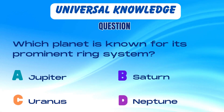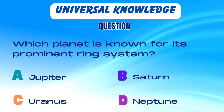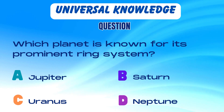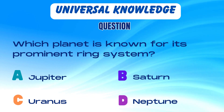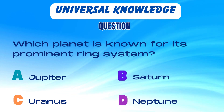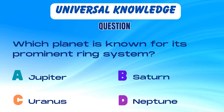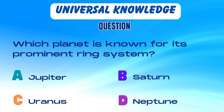Which planet is known for its prominent ring system? Is it A. Jupiter, B. Saturn, C. Uranus, or D. Neptune?